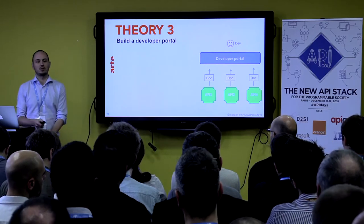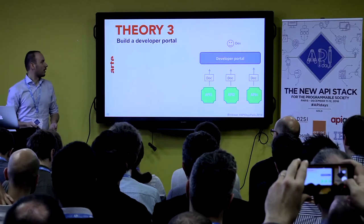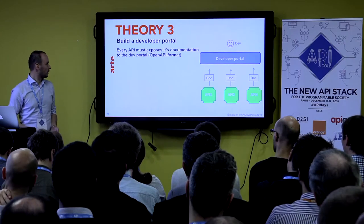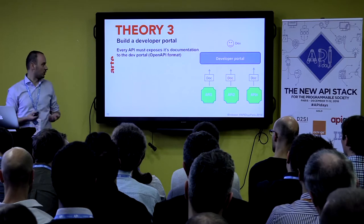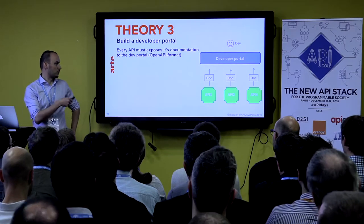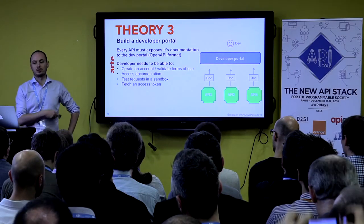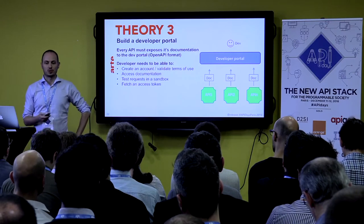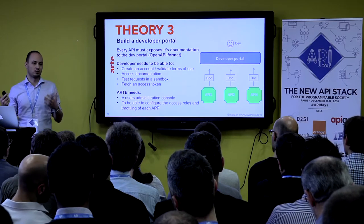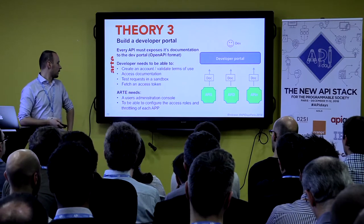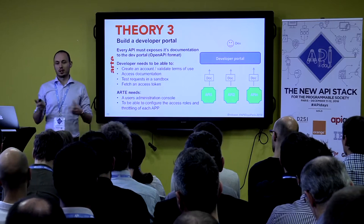We also built a developer portal because we were fed up of writing documentation in the Wiki — it was just complicated to give access to the documentation. The idea is every API should expose its documentation with Swagger or OpenAPI, and the developer portal would display it. Developers would need to create an account, access the sandbox, and so on. But this was pretty new in 2012, and there were no really renowned market tools doing it. We also needed some sort of administration console where we could manage users.